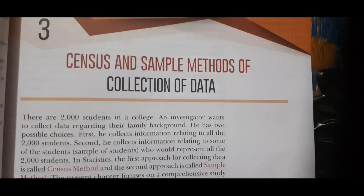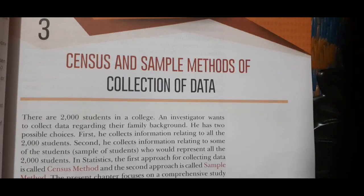Next important topic is sources of data. It has two types: primary data and secondary data. Primary data is that which is originally collected by an investigator or agency for the first time for some specific purpose, directly from the field of inquiry. Secondary data is that which has already been collected and processed by some agency other than the investigator for a different purpose. Primary data is more accurate and reliable as it is the original data collected by the investigator himself for a specific purpose.